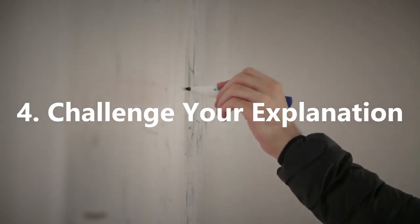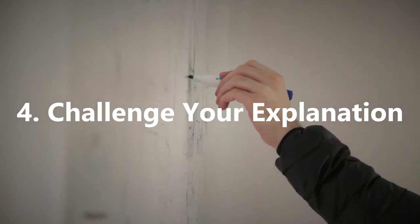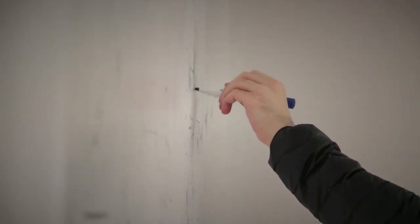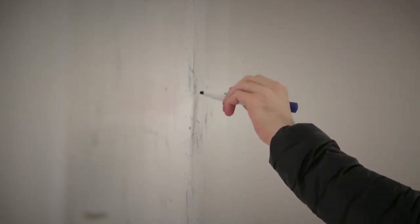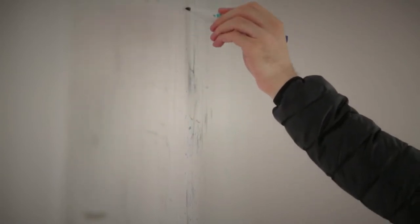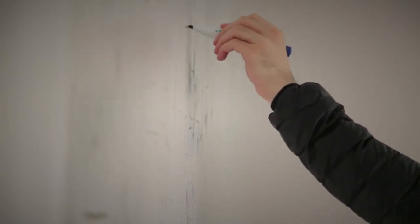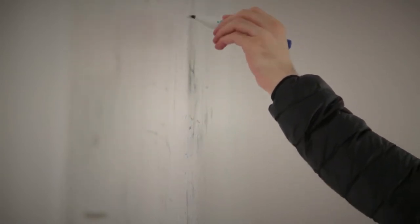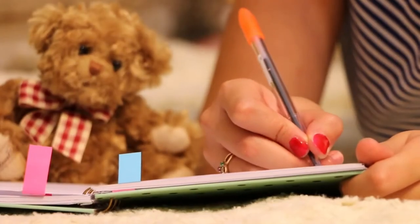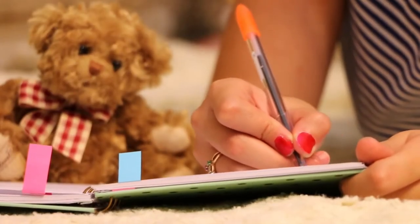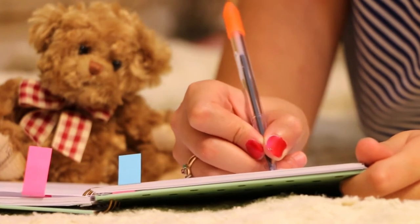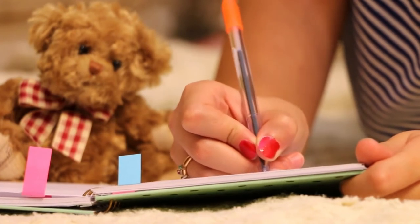Step 4: Challenge your explanation. When you have consolidated your understanding of the more complex areas of what it is you are trying to learn, again review your explanation. As you review it, try to further simplify parts where you may have used complex language or terminology.